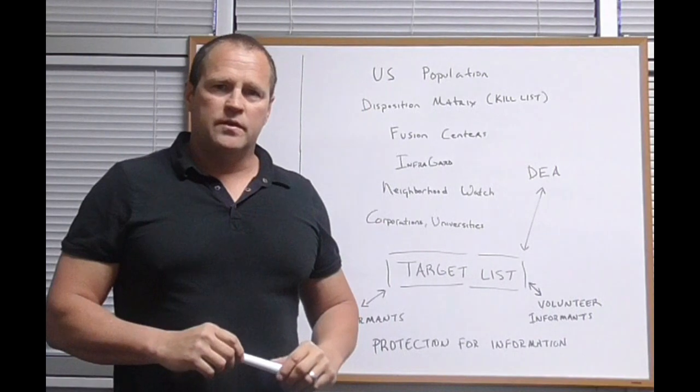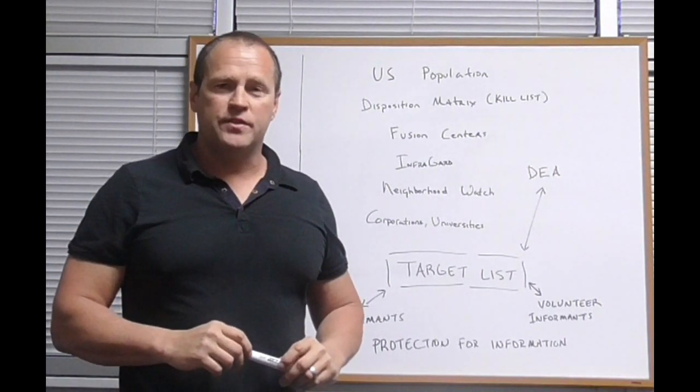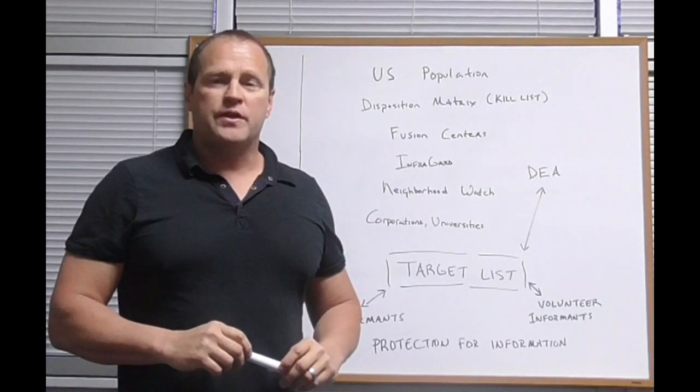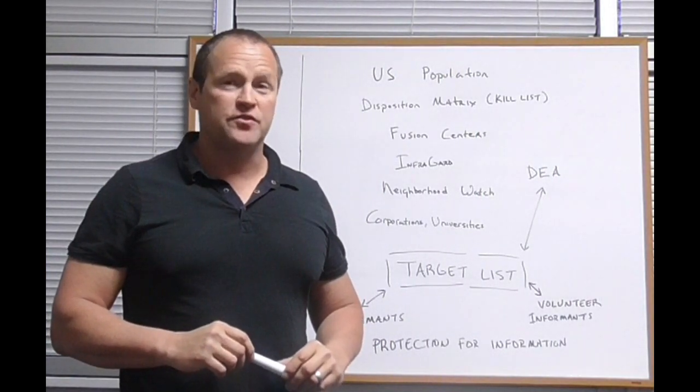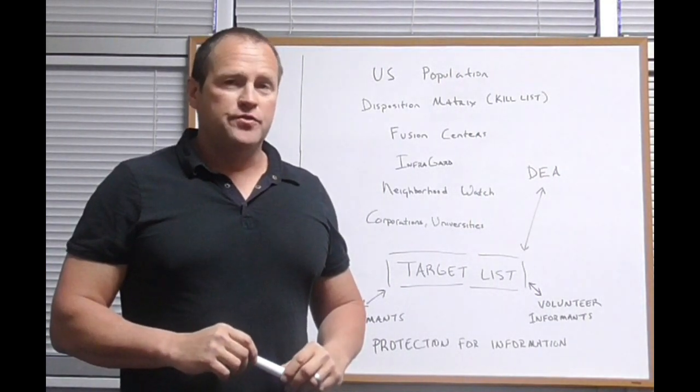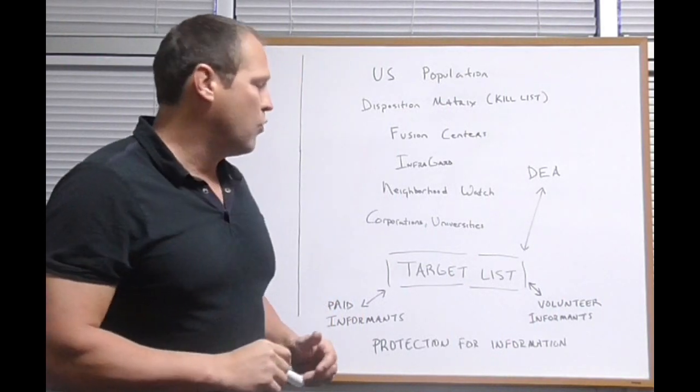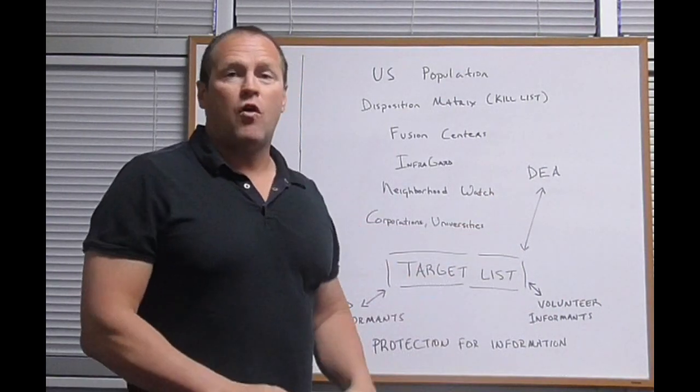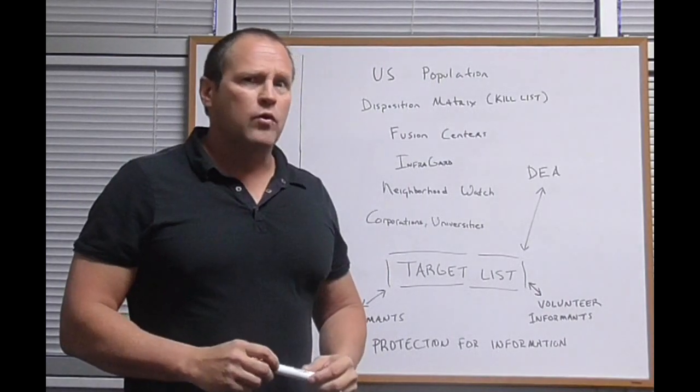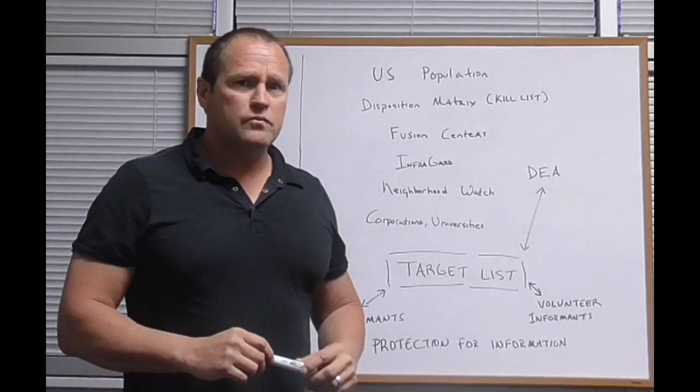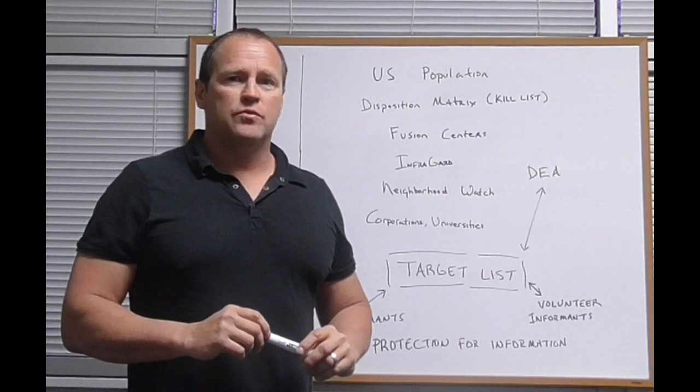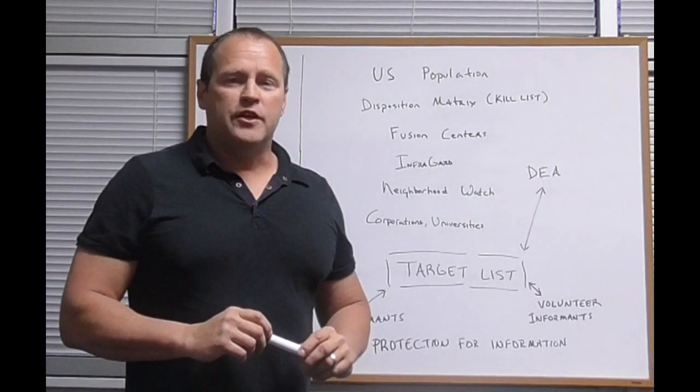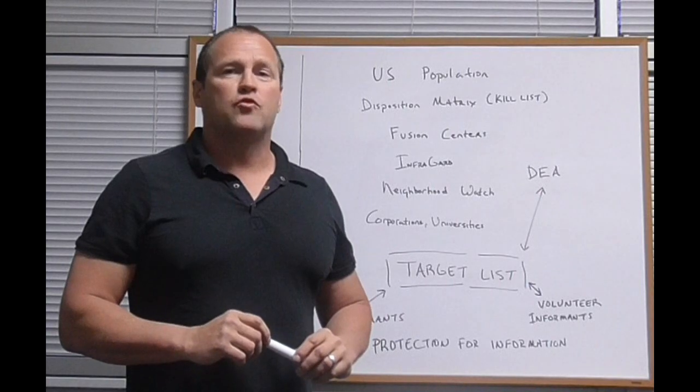So as you can see, this target list is compiled from these different agencies, third parties, and private organizations. And once the target list is formed, they can start using paid informants and volunteer informants. DEA has a large number or a large network of informants as well. And what these organizations are told is that these targeted individuals are people of interest and that they're involved in some criminal activity.